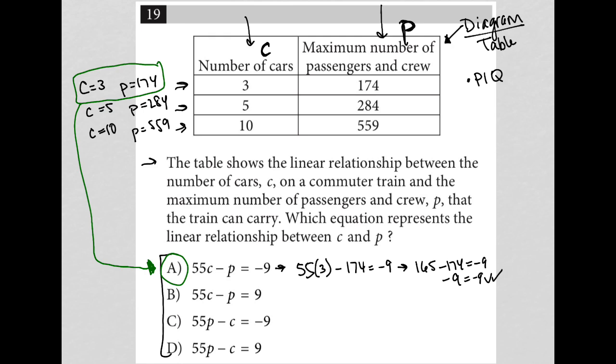We can see that there's no way B is correct, for instance, because it has the same exact left side as choice A, but then we have a positive 9. So that's not possible. And then choice C, we're multiplying 55 times P, 55 times 174, which is a huge number, minus just 3 is not going to give me negative 9. So C is gone and D is gone. Choice A is the best answer.